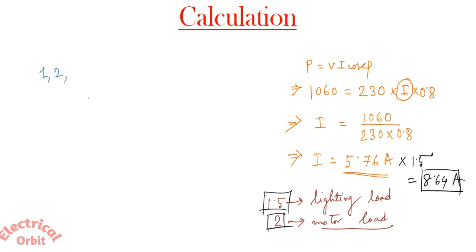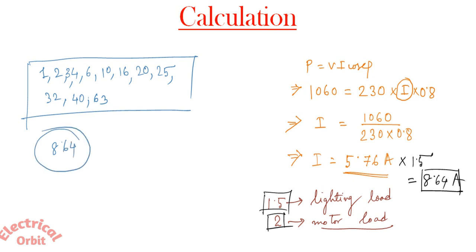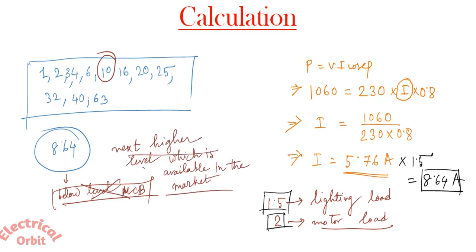You may find 1 ampere, 2 ampere, 4 ampere, even 3 ampere in some company, 6 ampere, 10, 16, 20, 25, 32, 40 and 63. This is the range of MCB available in the market. So you have to find the MCB which is available next to 8.64 ampere, higher than 8.64 ampere. That means 10 ampere will be suitable for your circuit. You should not go for the below level MCB which is market available. This is perfectly wrong. You should go for the next higher level which is available in the market.